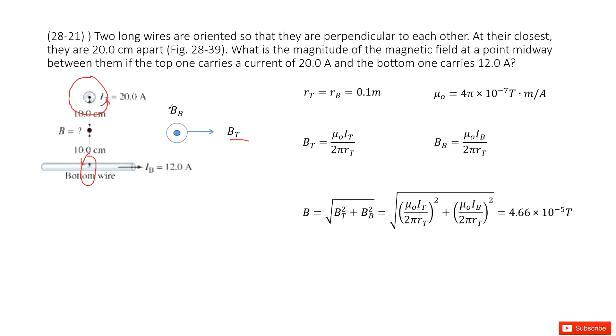So very obviously, BB and BT are perpendicular to each other. If we want to find the net magnetic fields from BB and BT, we just need to consider these two components together.